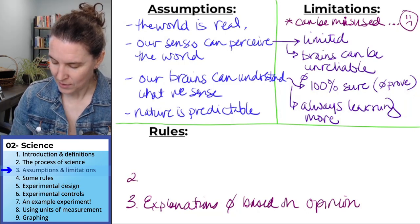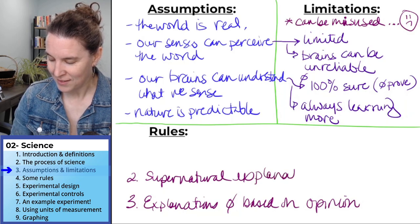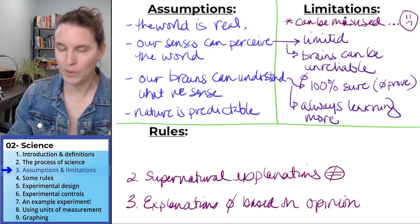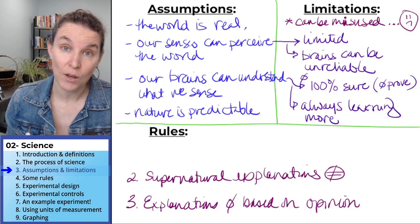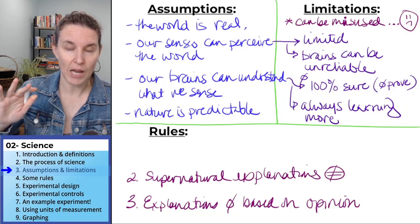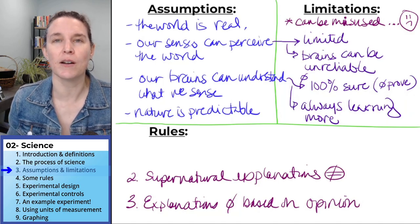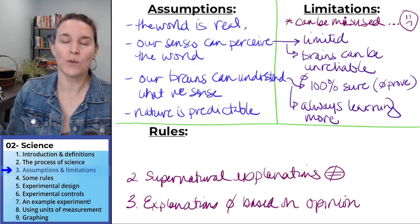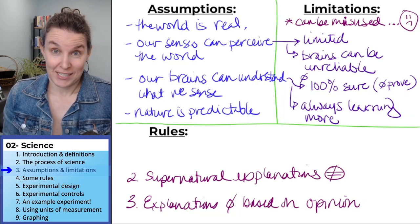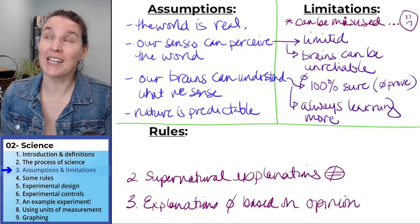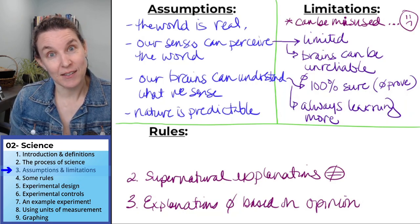Rule number two is that supernatural explanations cannot be used. Nobody knows what that symbol means, but it means no. You cannot use a supernatural explanation for something you're observing. You can, I encourage it, but it isn't scientific and it isn't part of the process of science. So when you're doing something, you can't say I think my plant grew because the tree fairies came in my window in the night and kissed all the flower leaves. And that's why my plant grew in the night.